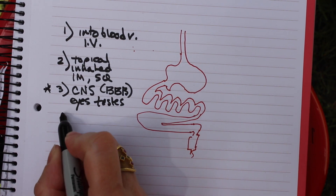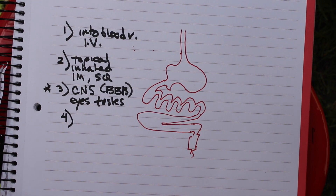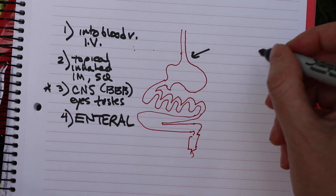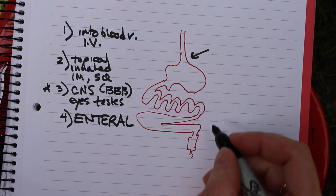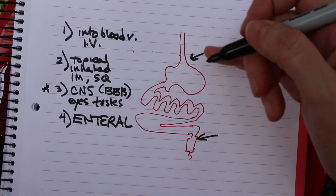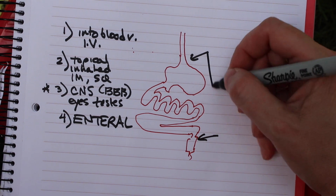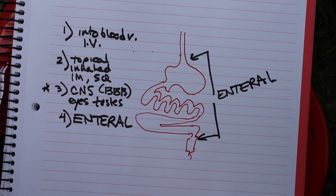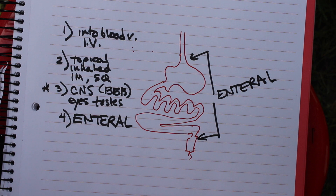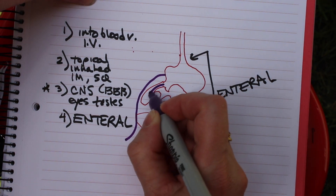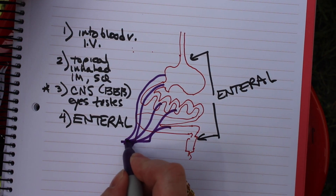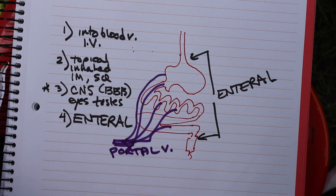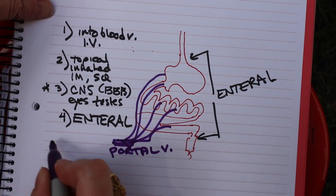The other common way of getting drugs into the bloodstream is the enteral way. Enteral means you've gotten the drug into the body by getting it into the stomach or intestines — from the stomach through to the top third of the rectum. The special thing about the enteral system is that all of the veins draining from the stomach and intestines first go to the portal vein, and the portal vein goes directly to the liver.